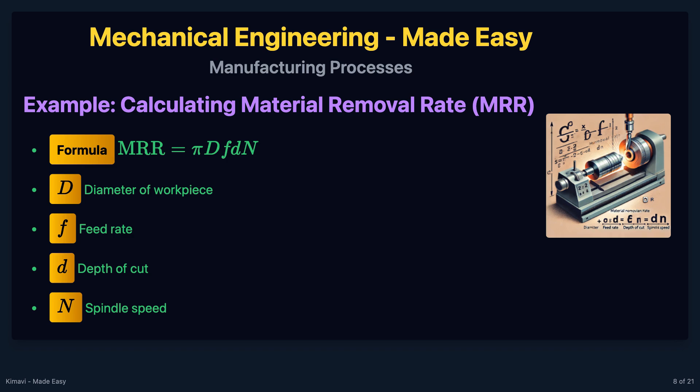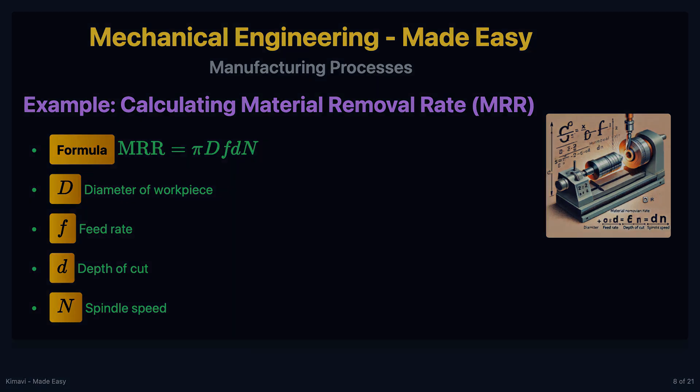For example, if a workpiece has a diameter of 2 inches, a feed rate of 0.01 inches per revolution, a depth of cut of 0.1 inches, and a spindle speed of 500 RPM, the MRR would be 3.14 cubic inches per minute.